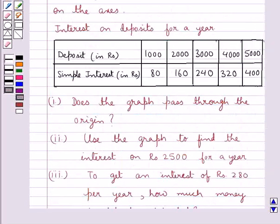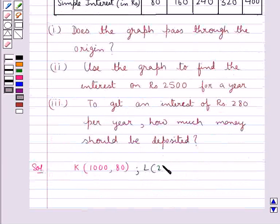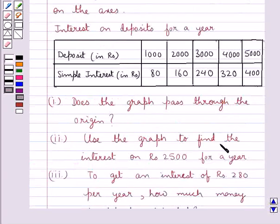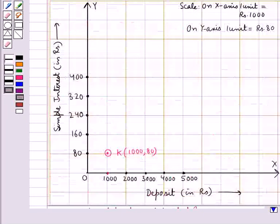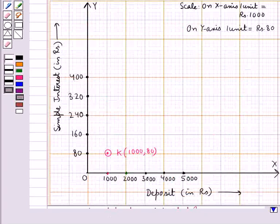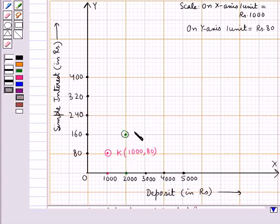The next point is L with coordinates (2000, 160), where 2000 is the deposit and 160 is the simple interest. To mark point L, we first locate 2000 on the x-axis, then move along the y-axis to the point corresponding to 160, and name this point L with coordinates (2000, 160).